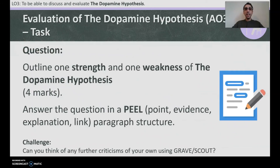Now answer the question: outline one strength and one weakness of the dopamine hypothesis. Write your answer in a KEEL paragraph structure. Start with 'One strength of the dopamine hypothesis as a biological explanation of schizophrenia is...' and then 'One weakness of the dopamine hypothesis as a biological explanation of schizophrenia is...' Explain why it is a strength or weakness — each point should earn you two marks. Give yourself five minutes.